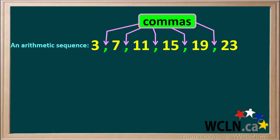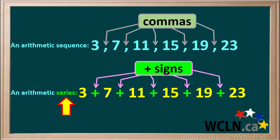As well as having similarities, sequences and series also have some differences. Remember, an arithmetic sequence has commas between the numbers, whereas an arithmetic series has plus signs between the numbers.